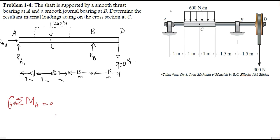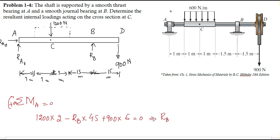The moment created due to the UDL would be 1200 multiplied by the moment arm of 2, and it is clockwise, so positive. The moment due to RB would be anticlockwise, so negative, with a moment arm of 4.5 (distance from A to B). The moment due to the 900 N force would be clockwise and positive, with a moment arm of 6 meters (distance from A to D). Solving this equation gives RB = 1733.33 N.